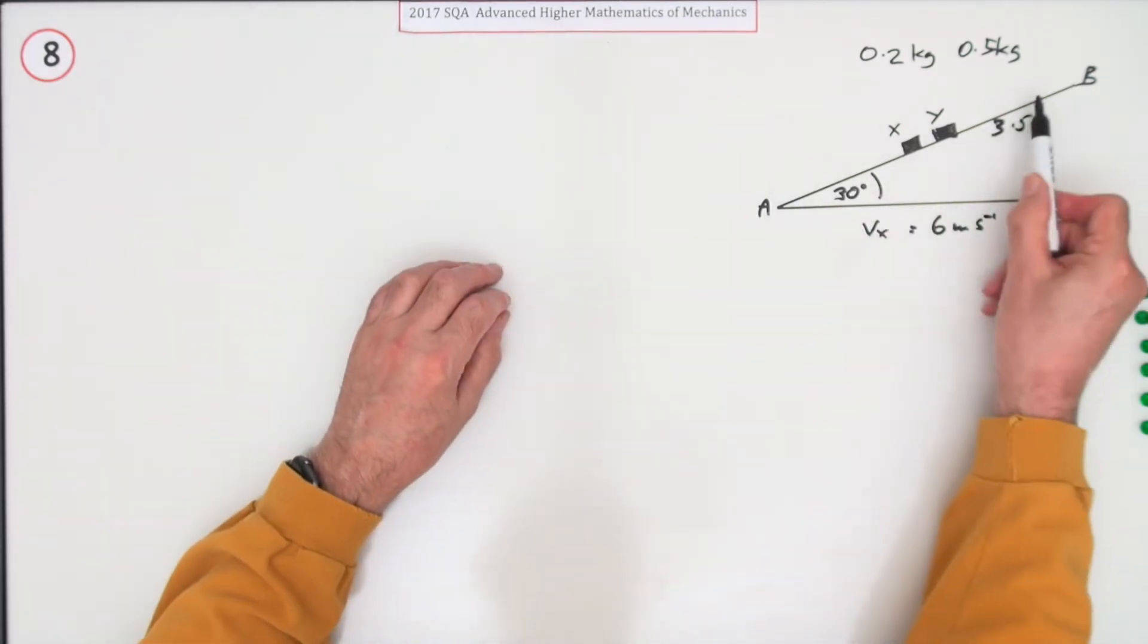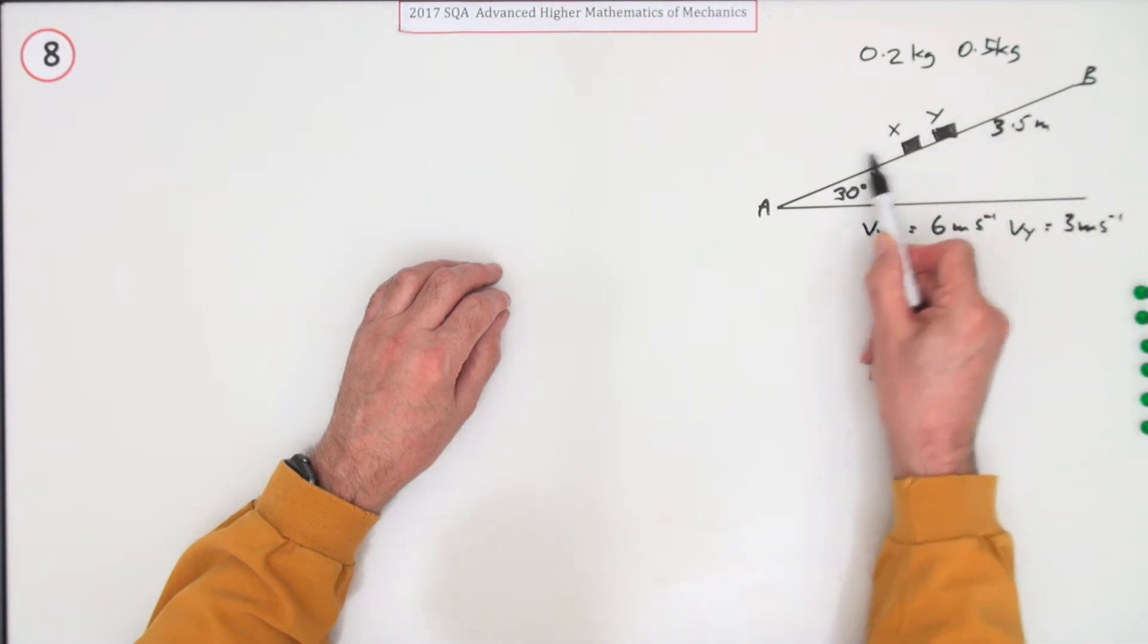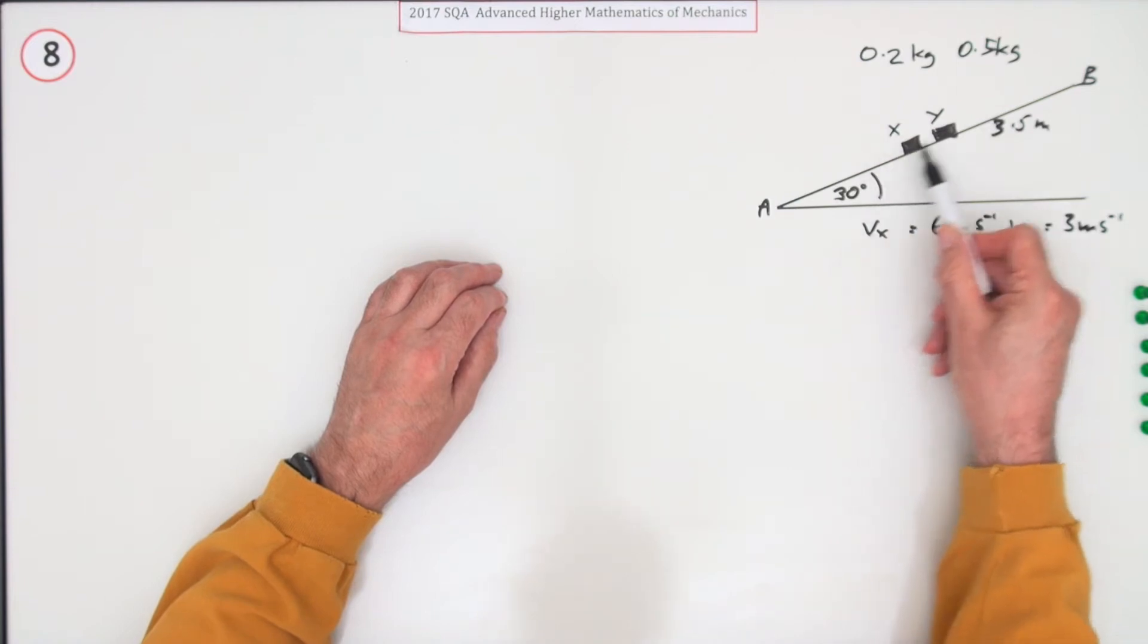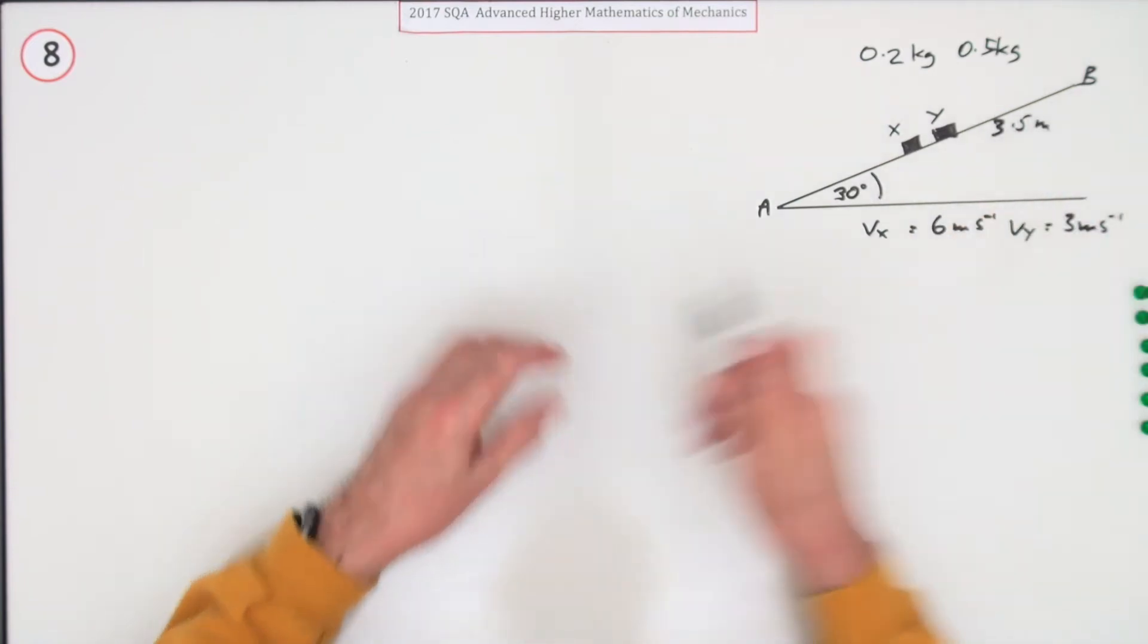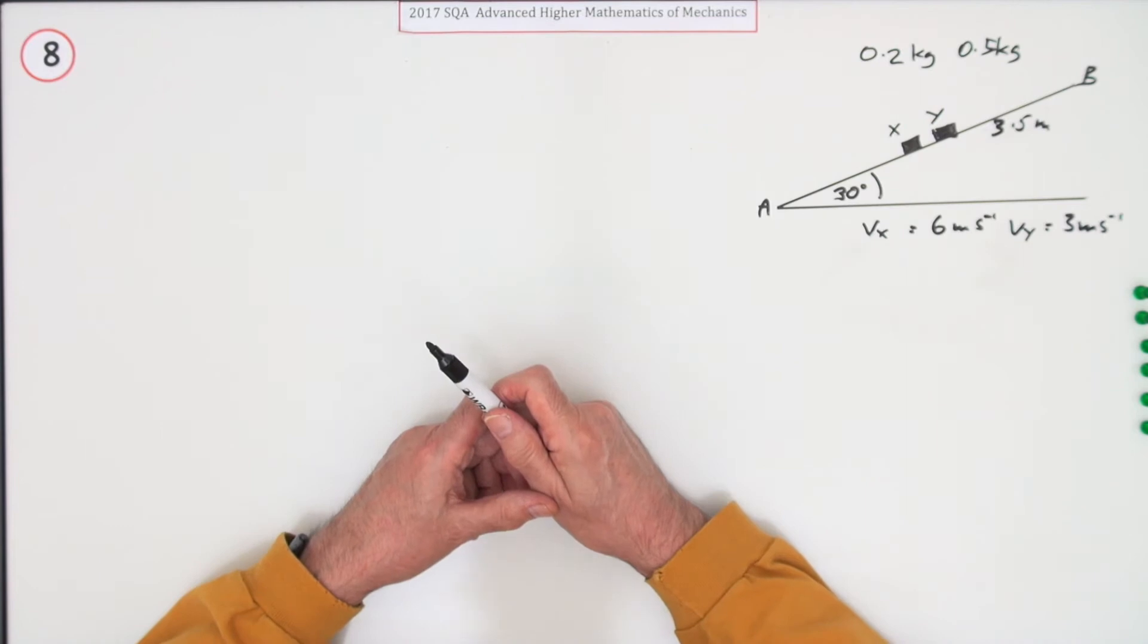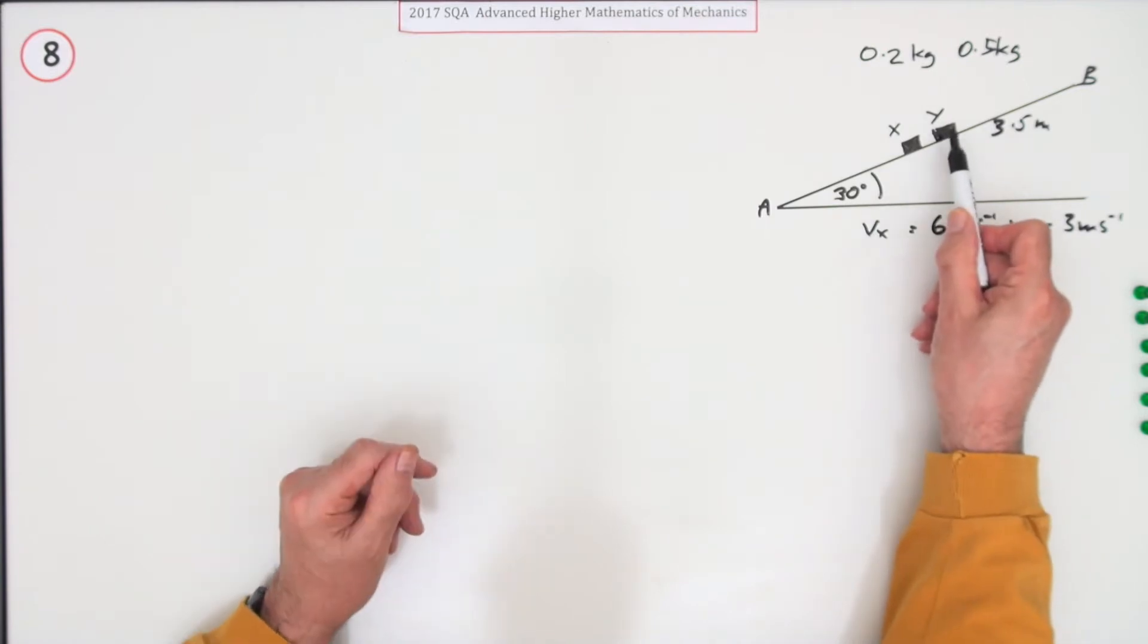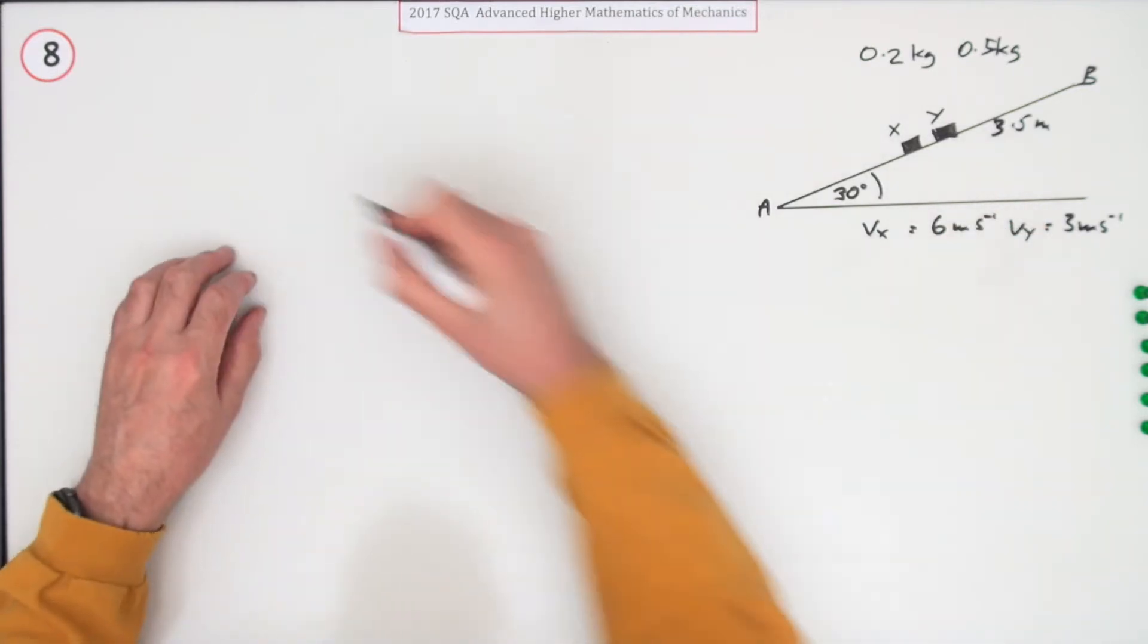Well that's like question 1. Question 1 you had a skier starting at rest coming down a certain distance and you had to get the velocity. Here you've got Y travelling up from a certain velocity until it gets to zero and the question is what's the distance? Will it make 3.5? So it's in two parts. The first part obviously will be the momentum question because you don't know what the speed of Y is. So momentum.